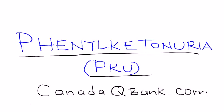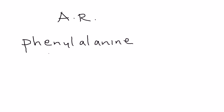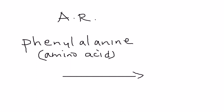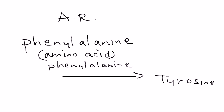Phenylketonuria, or PKU, is an autosomal recessive disease. It involves the amino acid phenylalanine, which is a building block of proteins. Phenylalanine is normally broken down into tyrosine via an enzyme known as phenylalanine hydroxylase. In PKU, this enzyme is deficient, so tyrosine levels become low and phenylalanine levels become very high.